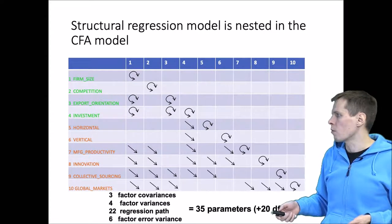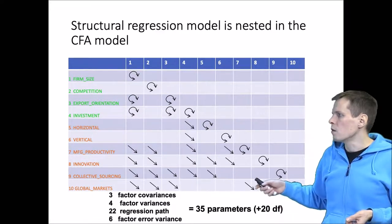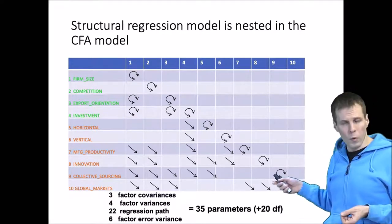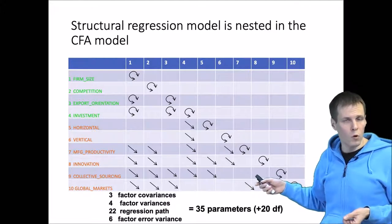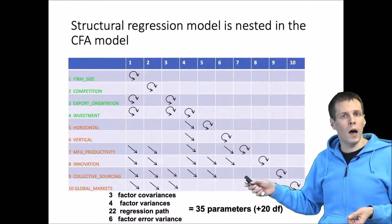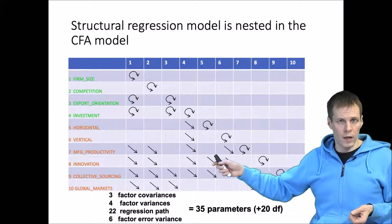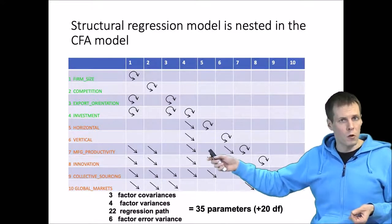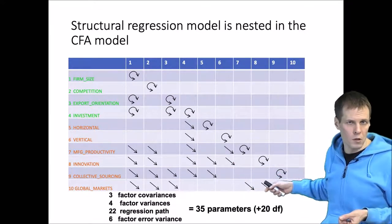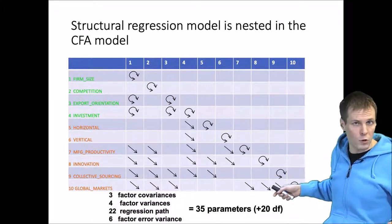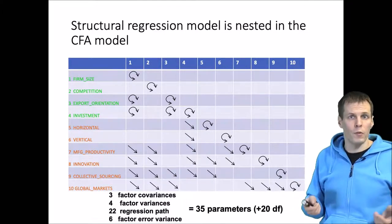Collective sourcing, global markets. Eventually, when we add global markets as a dependent variable, we actually allow it to be correlated with some of the other endogenous variables that we previously constrained to be uncorrelated. So the degrees of freedom went from 22 to 20 up from the base model.